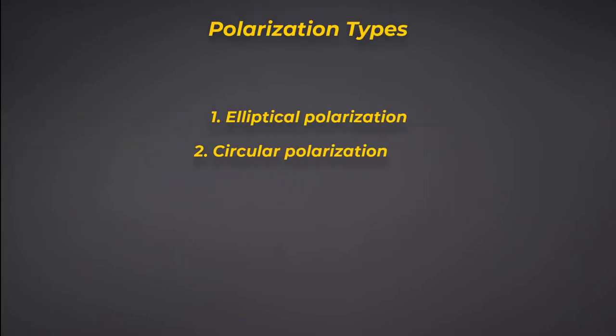There's elliptical, there's circular, and there's linear. In general, antennas like to radiate in an elliptical polarization.